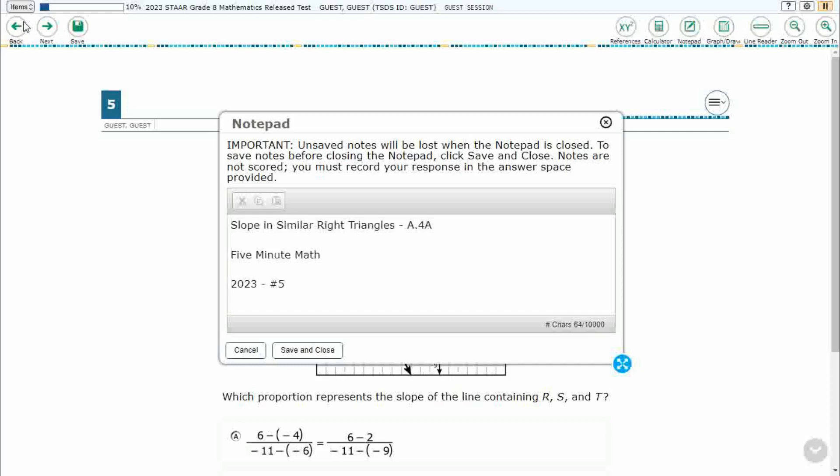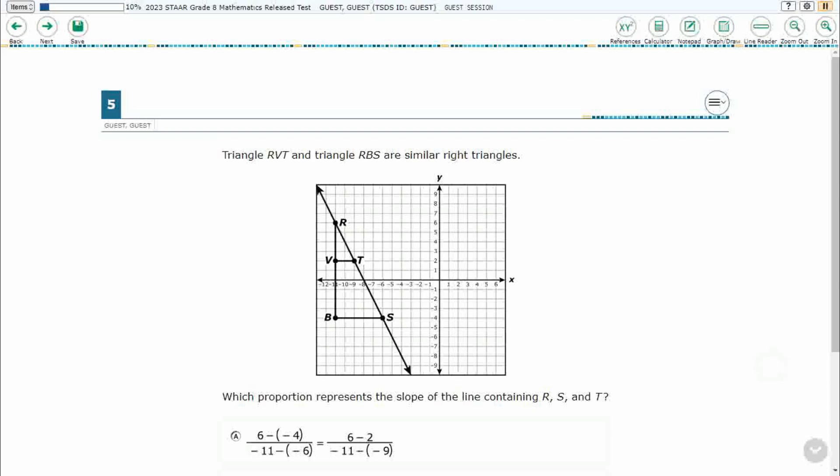Hello, and welcome to 5-Minute Math. Today we are looking at the 8th grade concept of slope in similar right triangles. This is standard A.4a in the Great State of Texas. We are using item number 5 of the 2023 released star test.